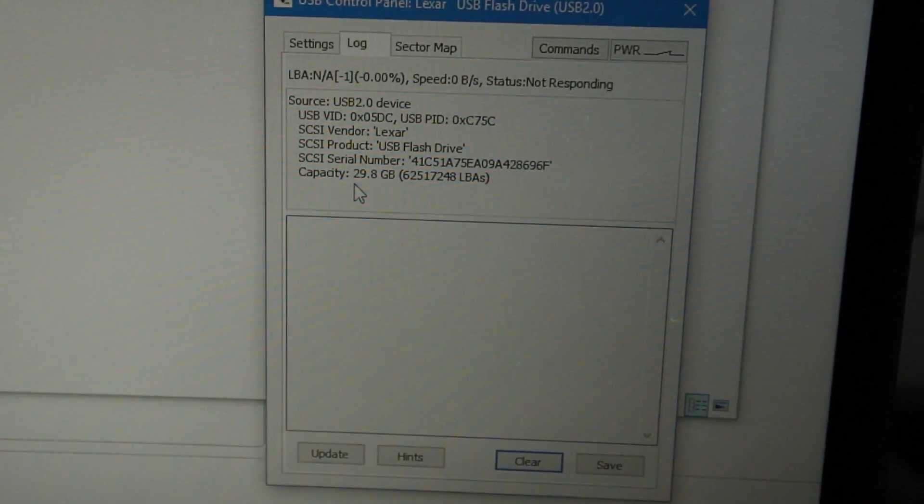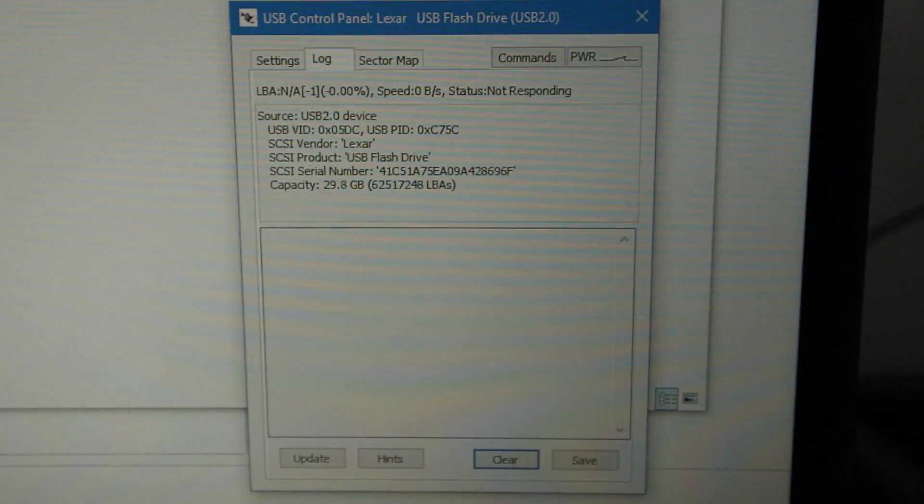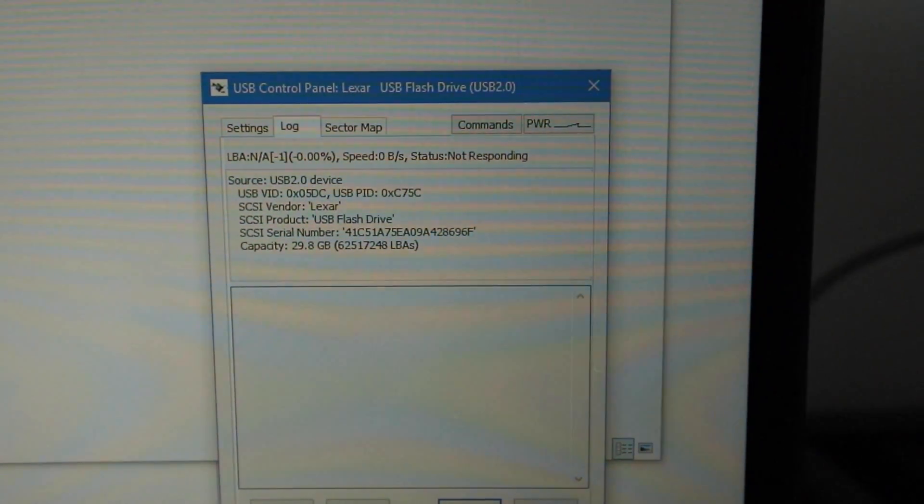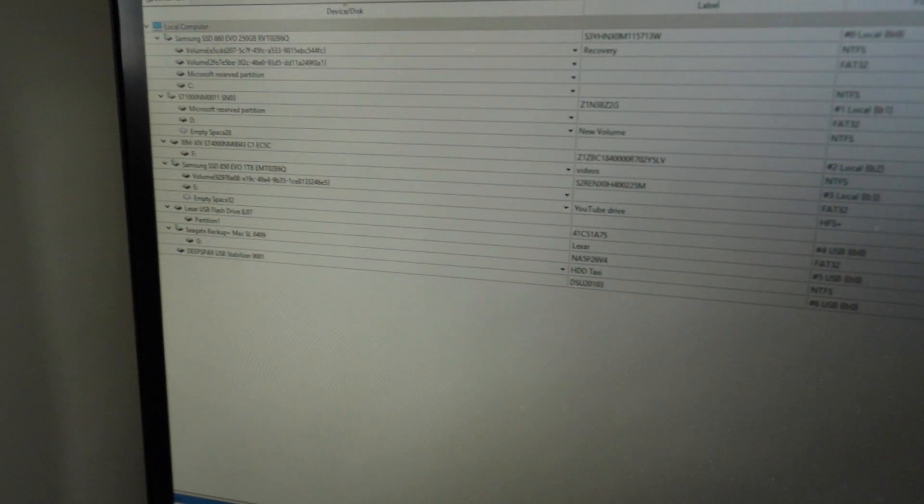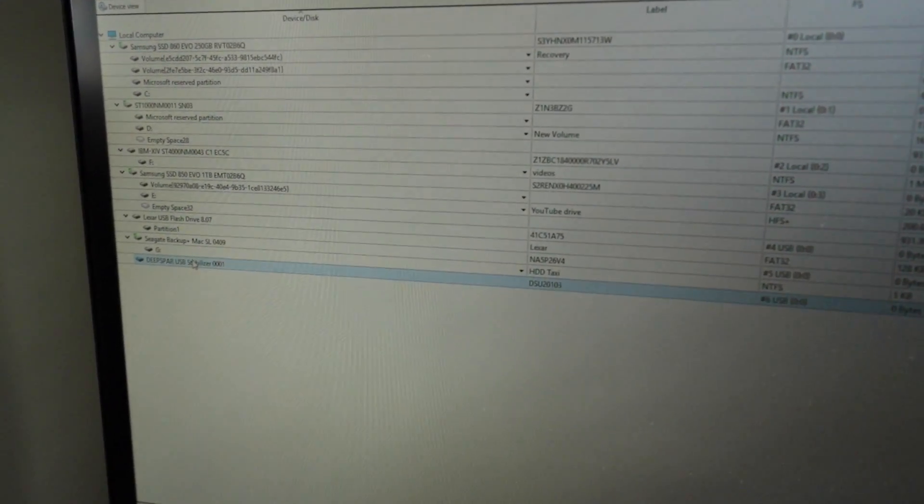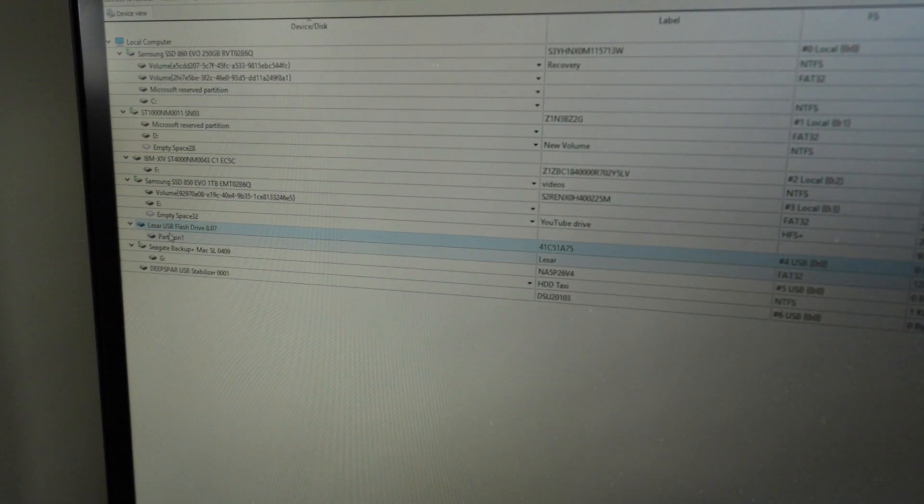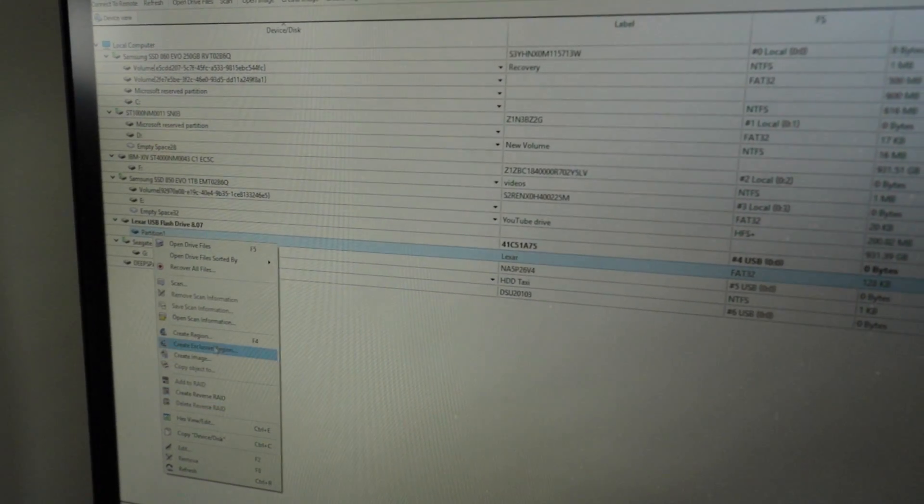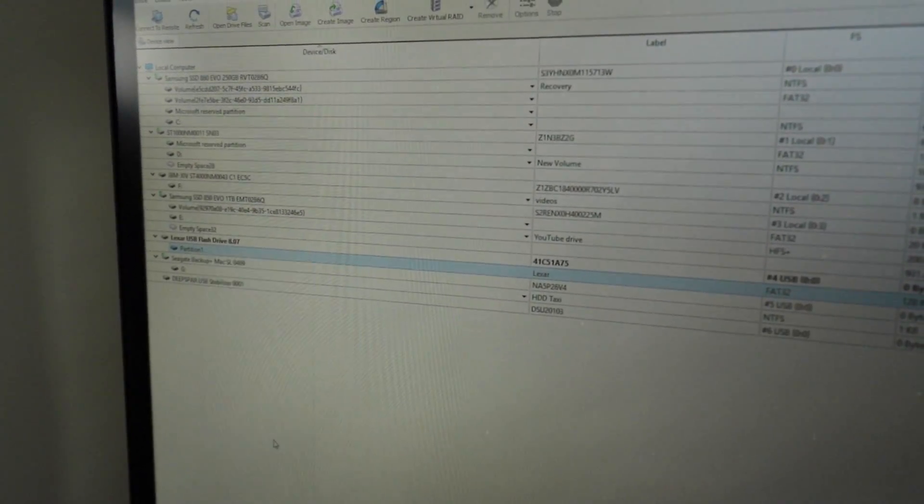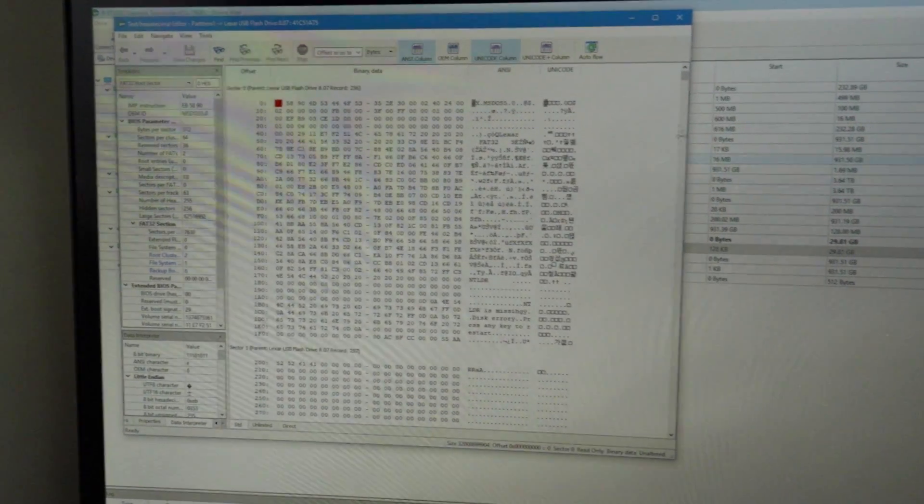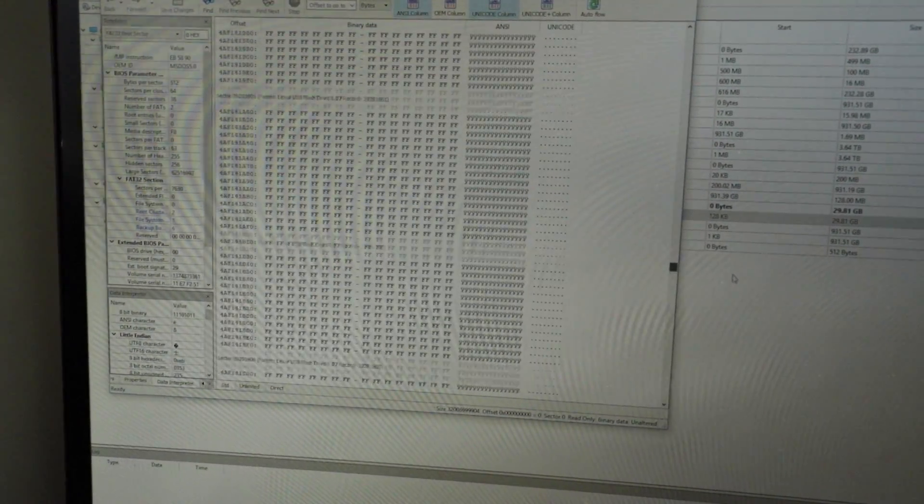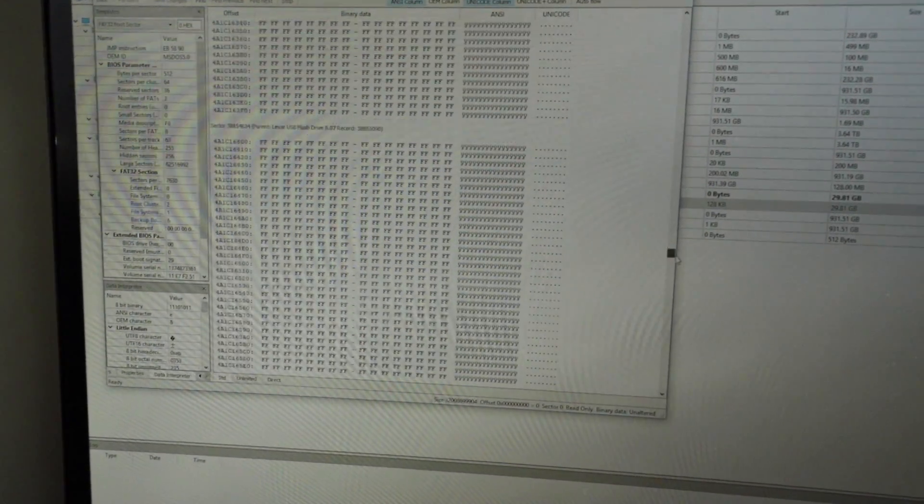You can see we get 29.8 gigs recognition. I'm going to launch a fresh screen for our studio. We have Deep Spar USB stabilizer, that's how we're going to work. We got USB, that's our flash drive right there. If we look at the hex view and scroll through it, that is data. So now if we clone this unit we should get all of that data back.